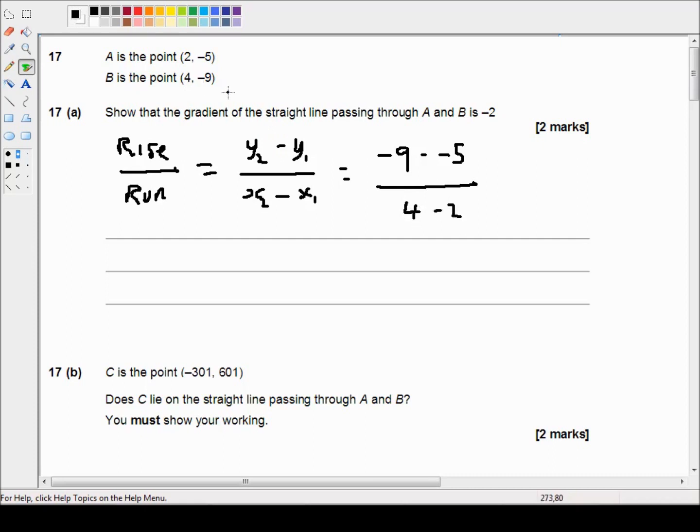If I'd have gone the other way around I would have done 2 minus 4 instead of 4 minus 2. So that's equal to, well -9 minus -5 is the same as -9 plus 5 which is -4, and that's divided by 4 minus 2 is 2, which is equal to -2.